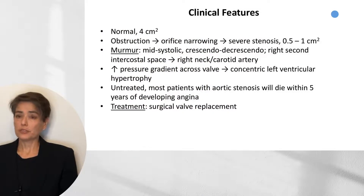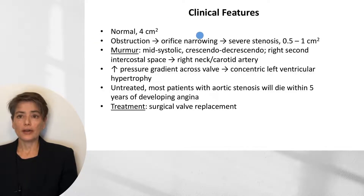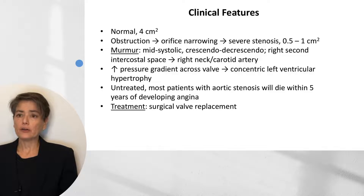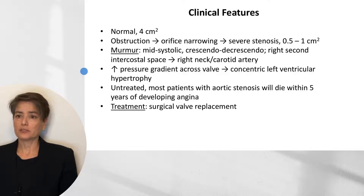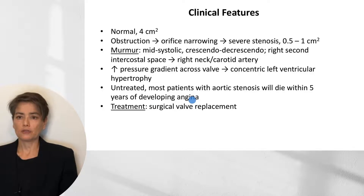For the clinical features of aortic stenosis, the normal aortic orifice area is 4 cm². Severe stenosis is considered to be 0.5 to 1 cm². You will detect a mid-systolic crescendo-decrescendo murmur heard at the right second intercostal space, radiating to the right neck and carotid artery. Because of the pressure gradient, we see concentric left ventricular hypertrophy. Untreated, most patients with aortic stenosis will die within five years of developing angina, and treatment is surgical valve replacement.